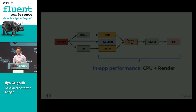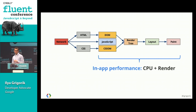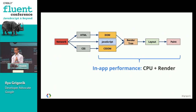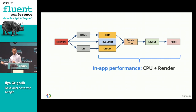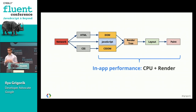That showed you the idea of the critical path and what you can do to optimize the rendering of CSS, DOM, and JavaScript. Once we've loaded the page and reached the first paint, we enter a new phase: in-app performance. Now we need to render pixels and react to user input, and hopefully we're doing this at 60 frames per second.